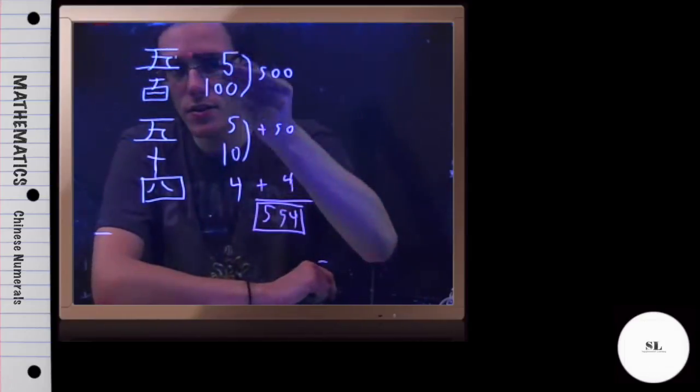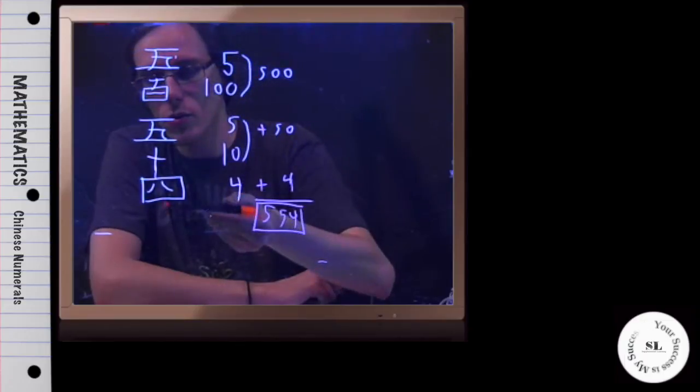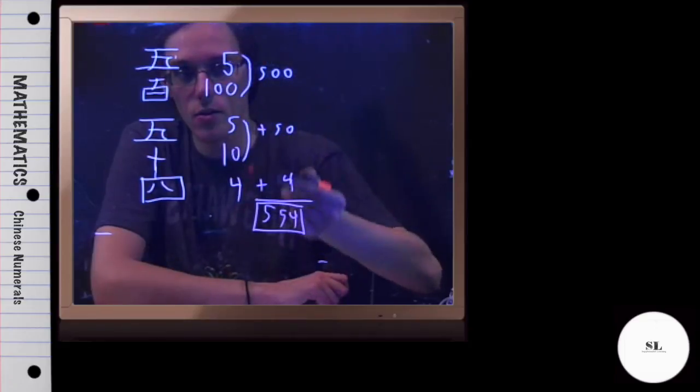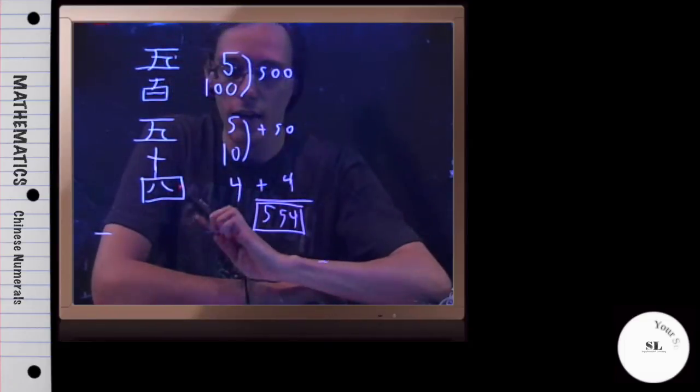And so symbolically, this is how in ancient Chinese you would write 554, and this is the positioning of the values and how they function. And that is this example.